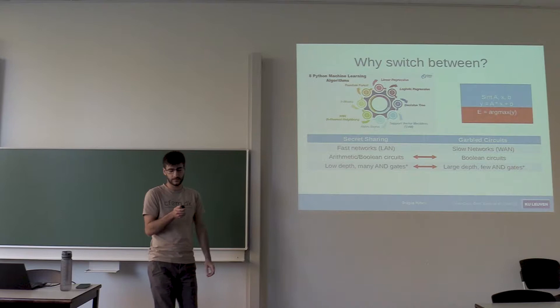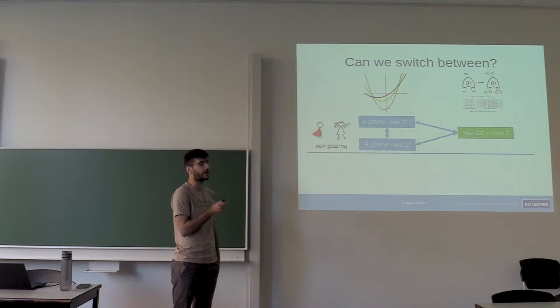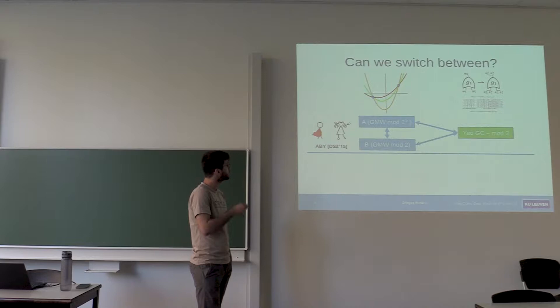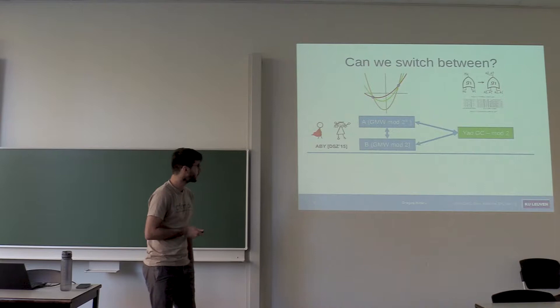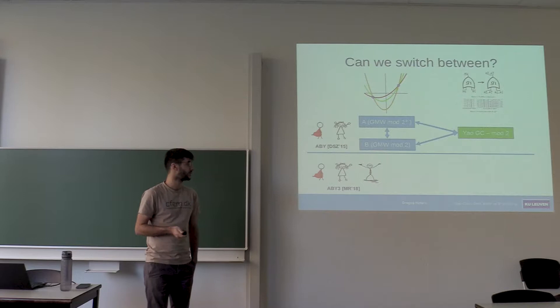There is some prior work to do this. It was done for the semi-honest case, when parties behave honestly. For the two-party case, there is work called ABBY, done by Demmler, Schneider and Zohner in 2015, which takes secret sharing schemes working mod 2^k or mod p, or even a binary secret sharing scheme, and converts between that and garbled circuits to obtain more efficient protocols. There's also recent work published at CCS last year, ABBY-3, which does this for three parties in the malicious but honest majority setting — good when at most one party is corrupt.